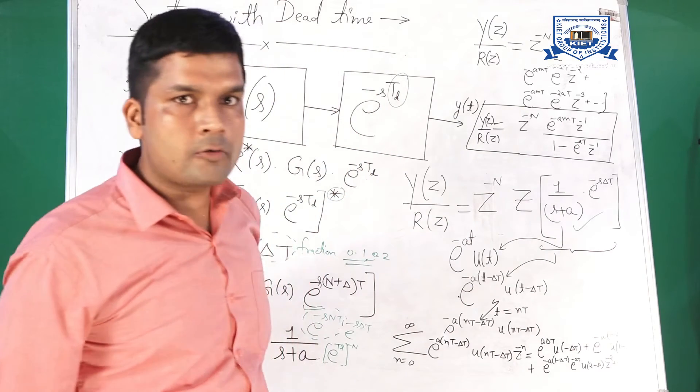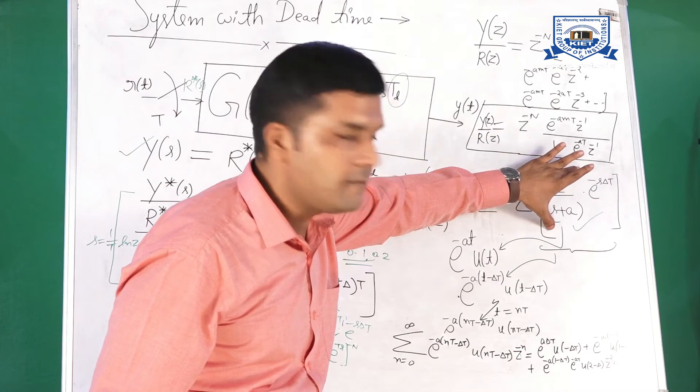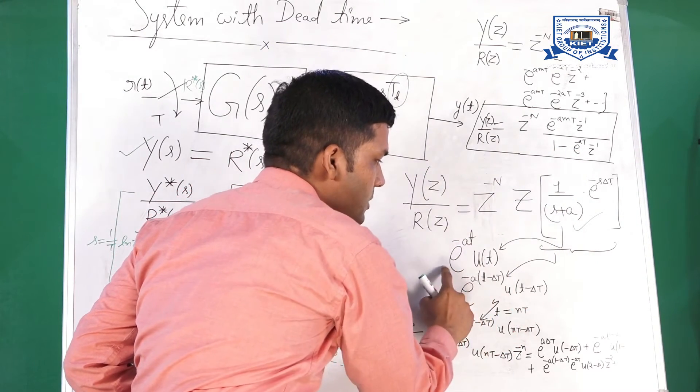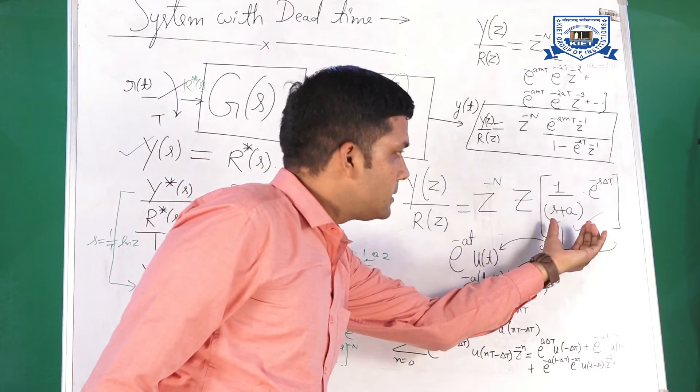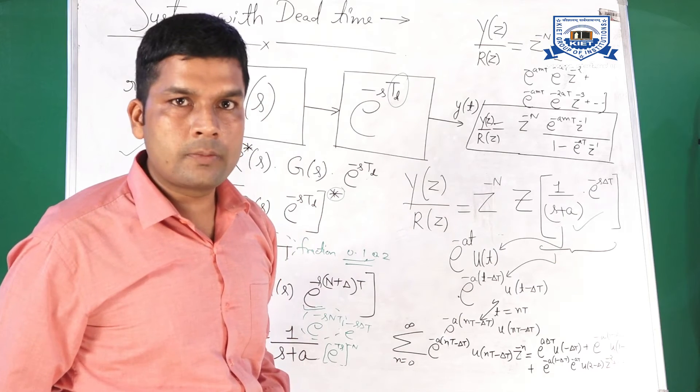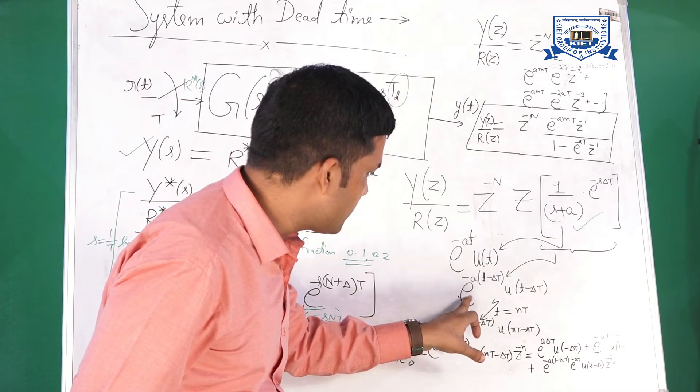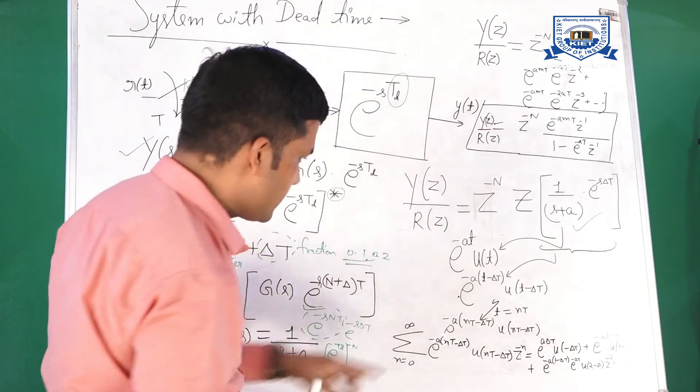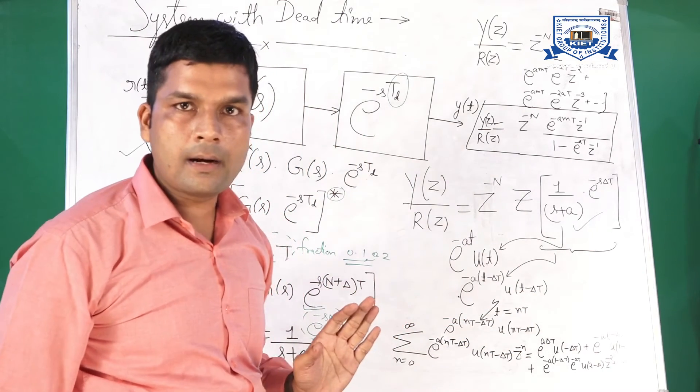Now, how to find z transform of this quantity? First of all, we have to find inverse Laplace. Inverse Laplace of 1 upon s plus a is e to the power minus at u(t). Then, using delay property of Laplace Z transform, you can write this function as e to the power minus a times t minus this. This is the delay part. t minus delta t into u(t minus delta t).